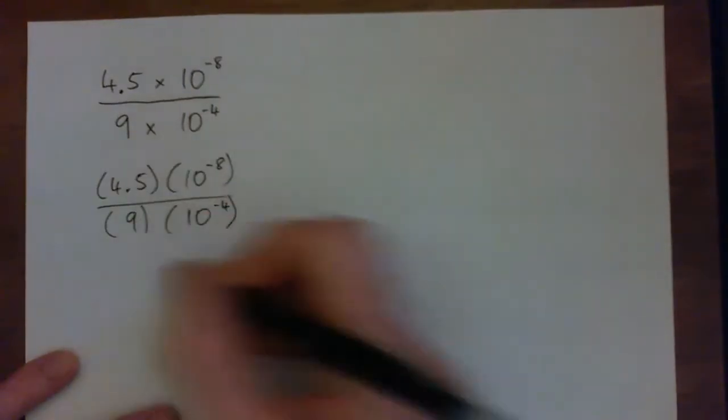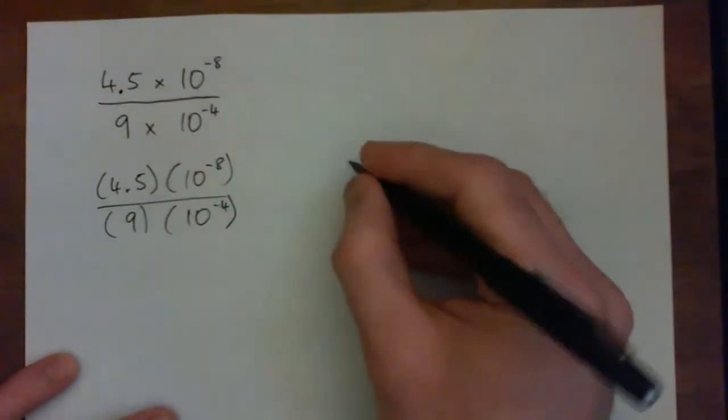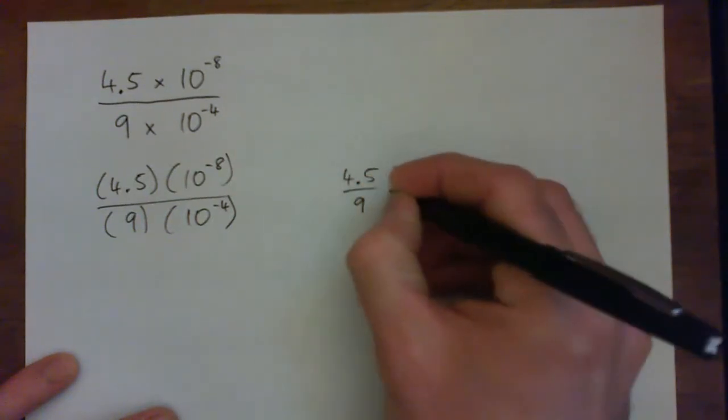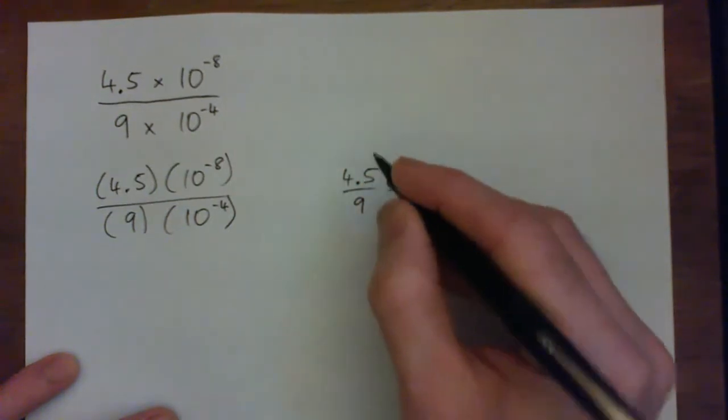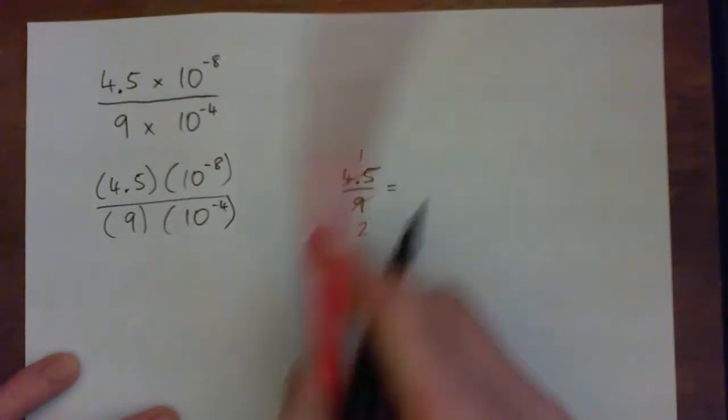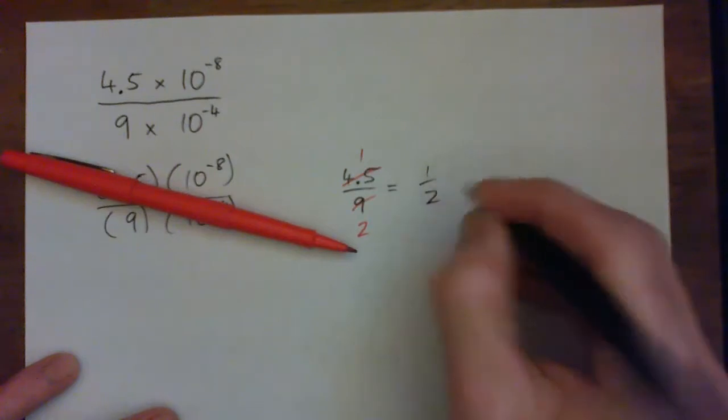So 4.5 over 9. 4.5 goes into itself once and it goes into 9 twice. So it's actually equal to 1 half, right?